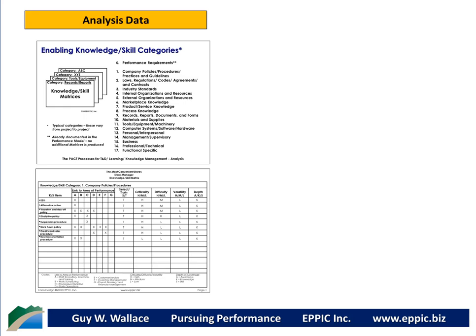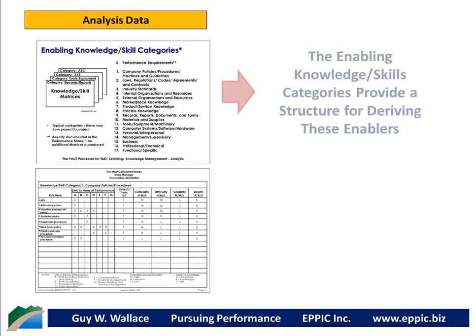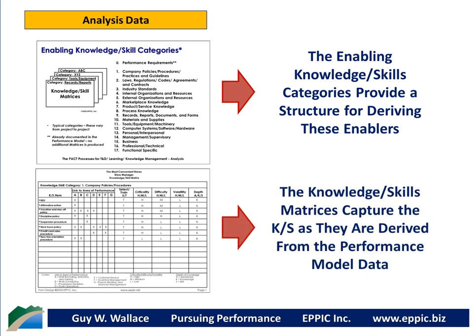The categories for knowledge and skills include company policies and procedures; laws, regulation, codes, agreements, and contracts; industry standards; internal and external organizations and resources; marketplace knowledge; product and service knowledge; process knowledge; records, reports, documents, and forms; materials and supplies; tools, equipment, machinery, computer systems, software and hardware; personal and interpersonal skills; management and supervisory skills; business knowledge and skills; professional and technical knowledge and skills; and functional specific knowledge and skills. I use these 17 categories to systematically elicit the knowledge and skills required to perform. The knowledge and skill matrices then capture the knowledge and skills as they are systematically derived from the performance model data. These two go hand in hand.